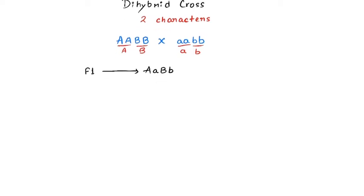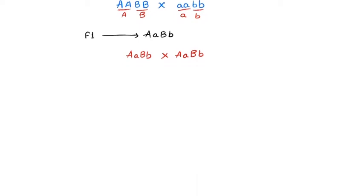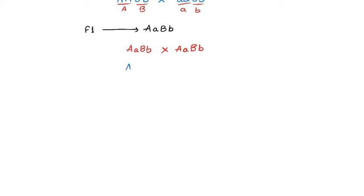To get to the F2 generation, where all the genotypic and phenotypic ratios occur, we self-cross the F1 progeny — capital A small a capital B small b — with the same genotype. The gametes we're getting are: capital A capital B (first gamete), capital A small b (second gamete), small a capital B (third gamete), and small a small b (fourth gamete).